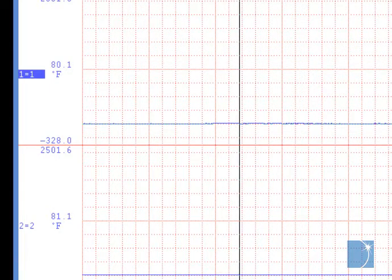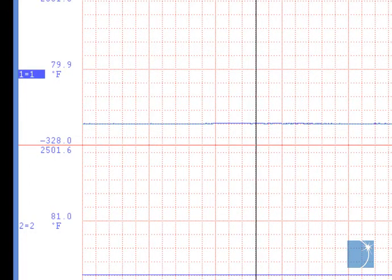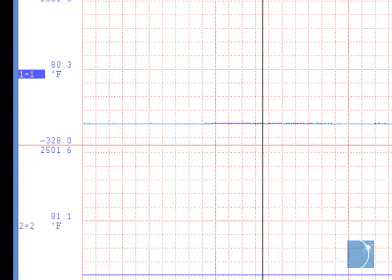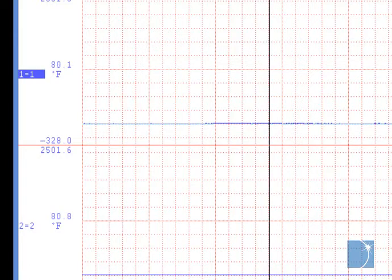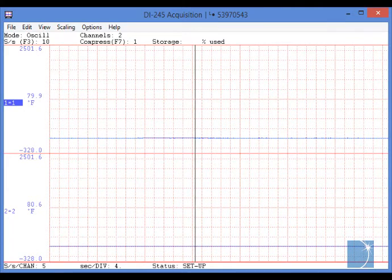Note that the temperature on channel 1 displays just a 0.4 degree offset, equivalent to 9 microvolts. Channel 2 displays an offset of about a half a degree. In the DI-245's $75 per channel price range, that type of common mode and crosstalk rejection is unheard of.